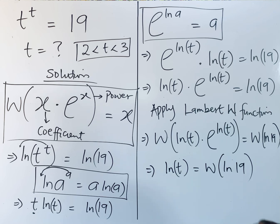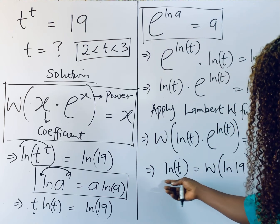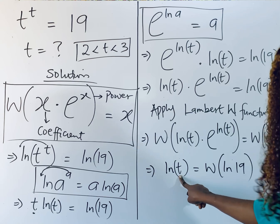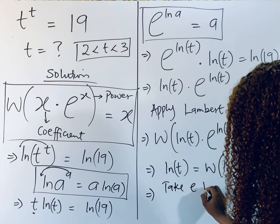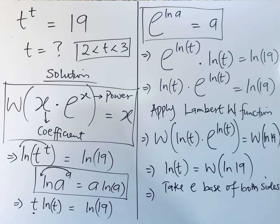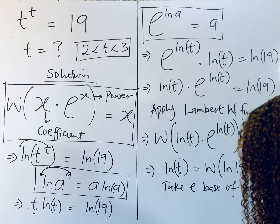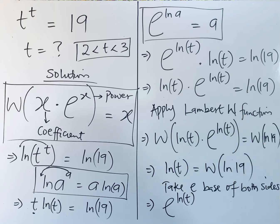So what do we do again? Our target is to find t. But we have to recall this statement we made here. So in that case, we're going to take the e base of both sides just for us to find this t. So we have: take e base of both sides. When you do that, you're going to now have: this gives us e to the power of ln of t equals e to the power of Lambert W of ln of 19.